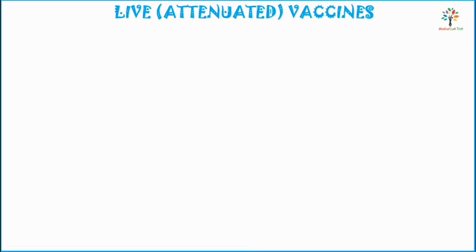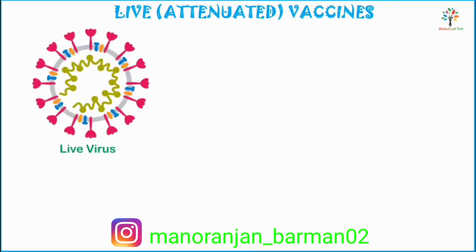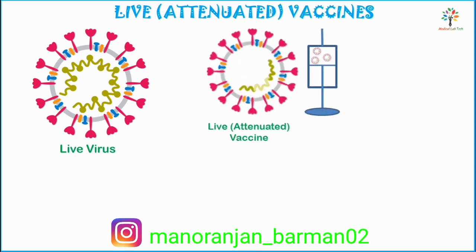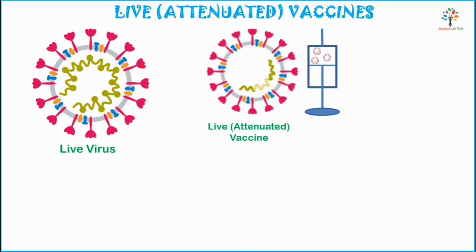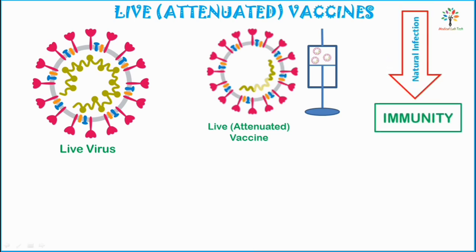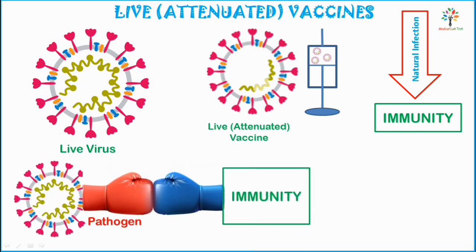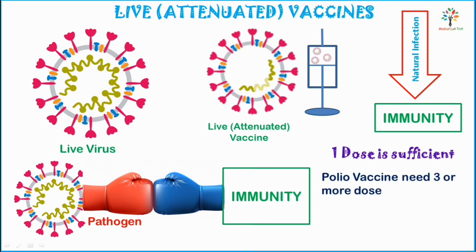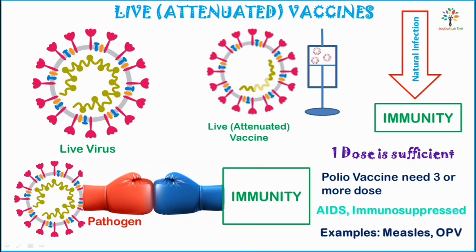Next, I am going to talk about live attenuated vaccines. As the name suggests, these vaccines are prepared from live organisms and contain a weakened version of a living organism — a virus or bacteria — which has lost its capacity to cause disease but can still induce an immune response. Since this vaccine uses live organisms, it is close to a natural infection and will train our immune system how an actual pathogen looks like without causing severe disease. Usually one dose is sufficient, but the polio vaccine is an exception and requires three or more doses at spaced intervals. Persons with AIDS, immunosuppressed patients, or those undergoing chemotherapy or radiotherapy should not take these vaccines. Examples include the measles vaccine and the oral polio vaccine (OPV).